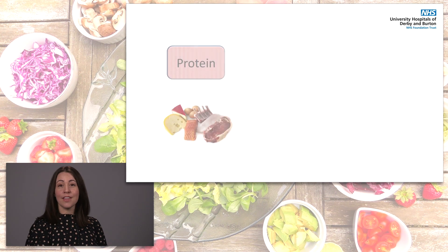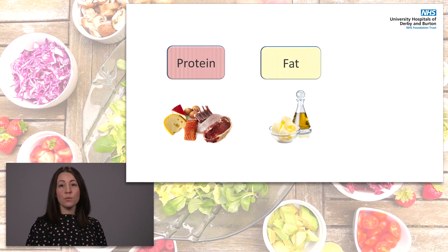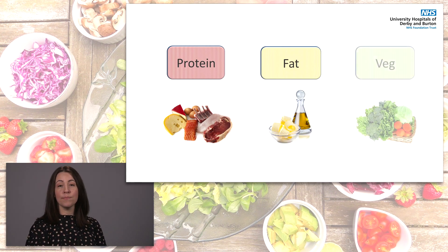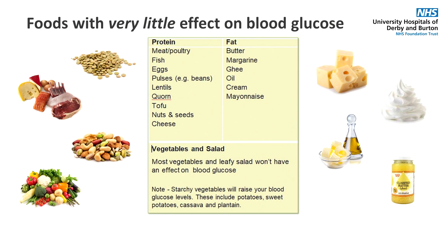Let's look at the other food groups in our diet. There are protein foods which include meat, fish, seafood and eggs. Foods which are mostly fat such as butter, margarine, lard, ghee, oils and some dairy foods like cheese and cream. All of these foods have very little effect on our blood sugar as they are broken down into other nutrients which help to keep us strong and healthy. This also includes most vegetables and salad. Vegetables do contain some carbohydrate, however it is trapped inside tough fibre which the body cannot break down enough to release the carbohydrate.